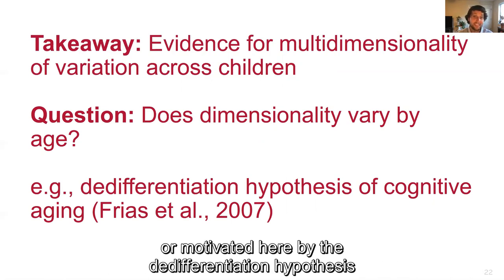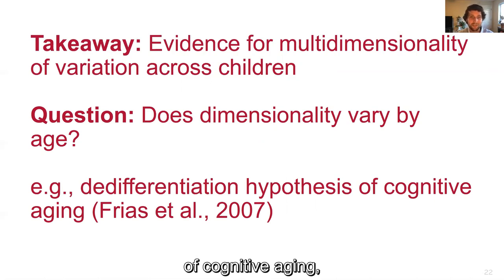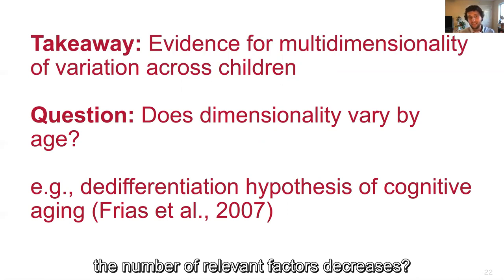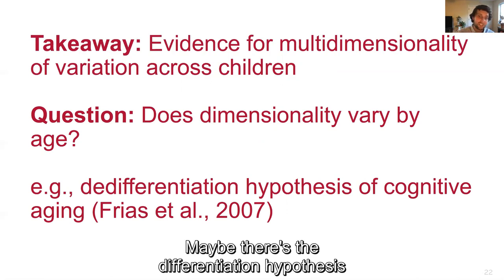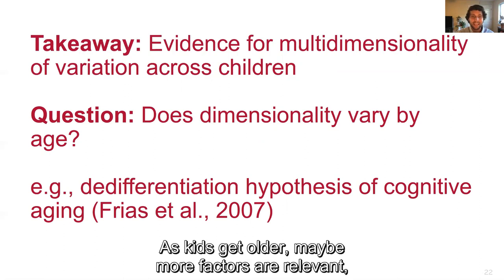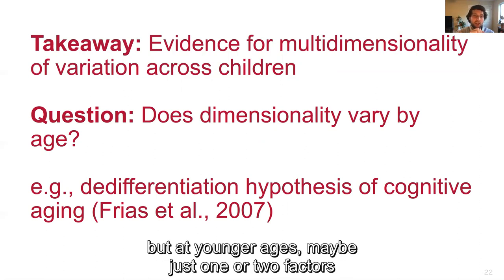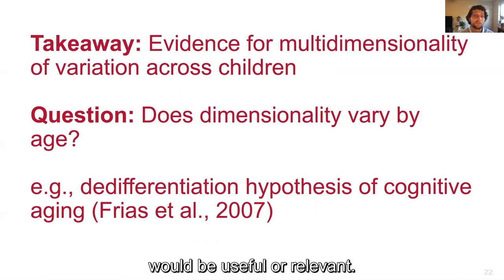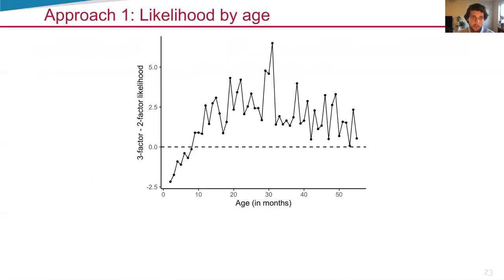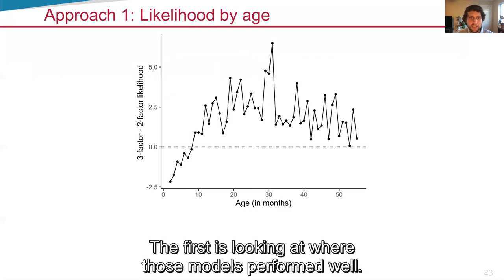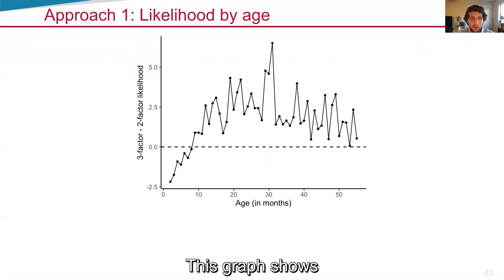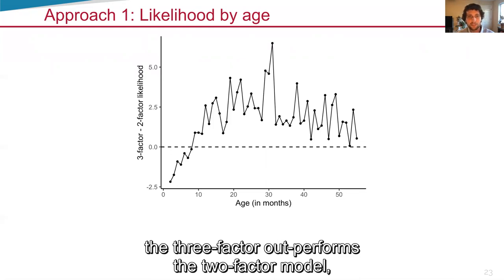We're motivated here by the de-differentiation hypothesis of cognitive aging that as people get older, the number of relevant factors decreases. Maybe there's the differentiation hypothesis of child development. As kids get older, maybe more factors are relevant, but at younger ages, maybe just one or two factors would be useful or relevant. We looked at this in two ways. The first is looking at where those models performed well. This graph shows that above 10 months of age, the three-factor model outperforms the two-factor model.